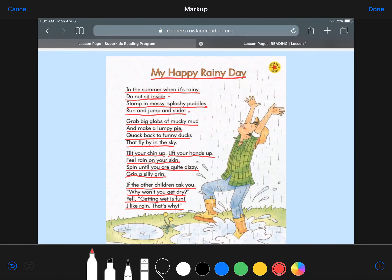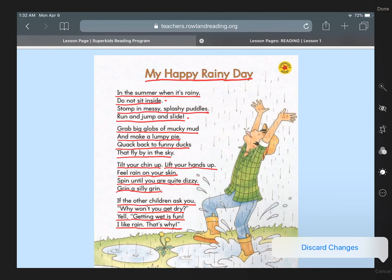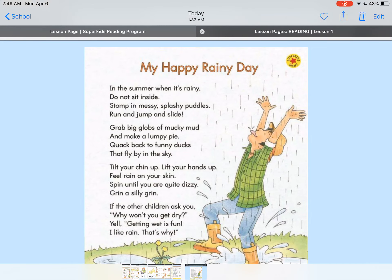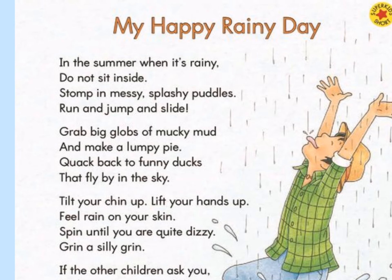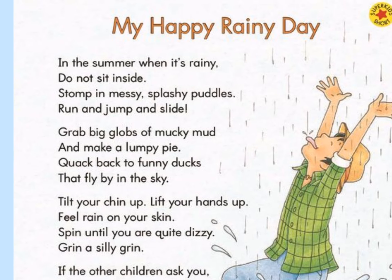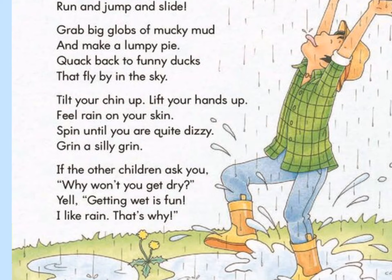So that's how the story sounds. I'm going to read it for you once more. And this time I'm not going to read it in a slow way. I'm just going to read it in the regular way so that you can hear the sound of the poem. Here we go. My happy rainy day. In the summer, when it's rainy, do not sit inside. Stomp in messy, splashy puddles. Run and jump and slide. Grab big globs of mucky mud and make a lumpy pie. Quack back to funny ducks that fly by in the sky. Tilt your chin up. Lift your hands up. Feel rain on your skin. Spin until you are quite dizzy. Grin a silly grin. If the other children ask you, Why won't you get dry? Yell, getting wet is fun. I like rain. That's why.